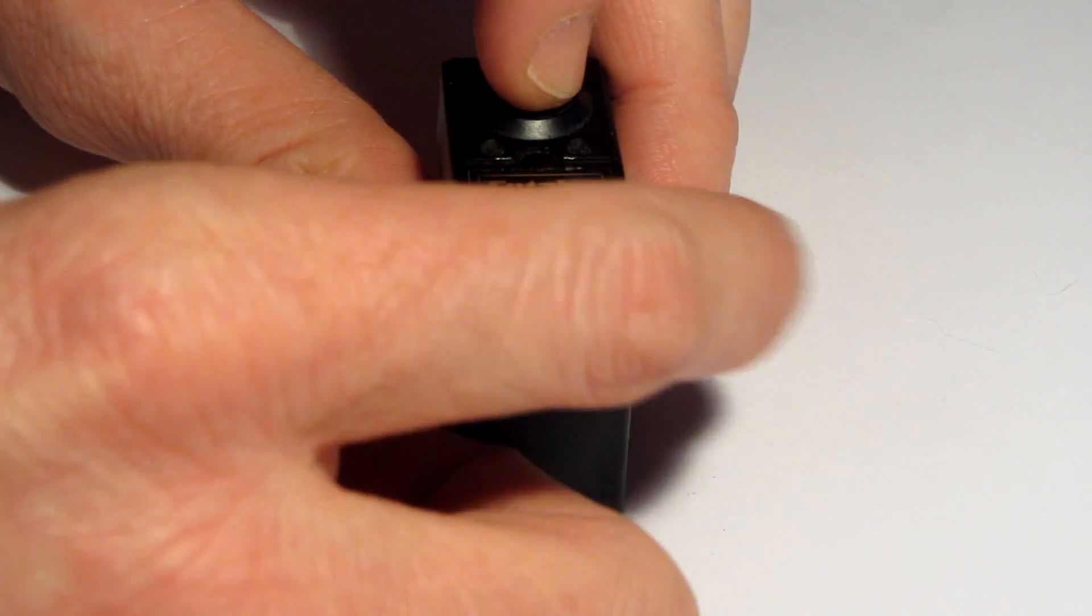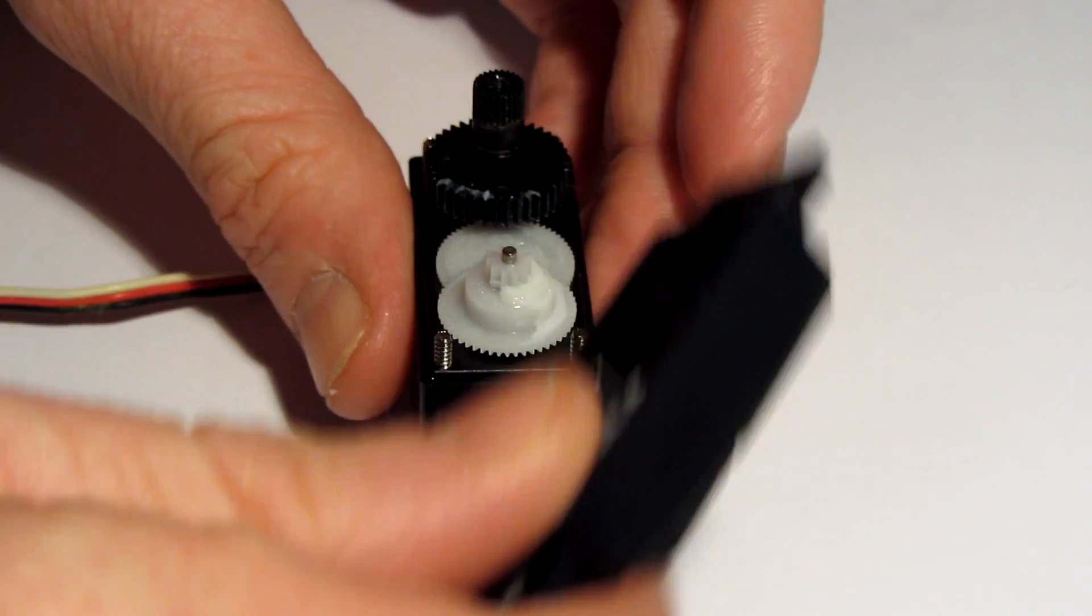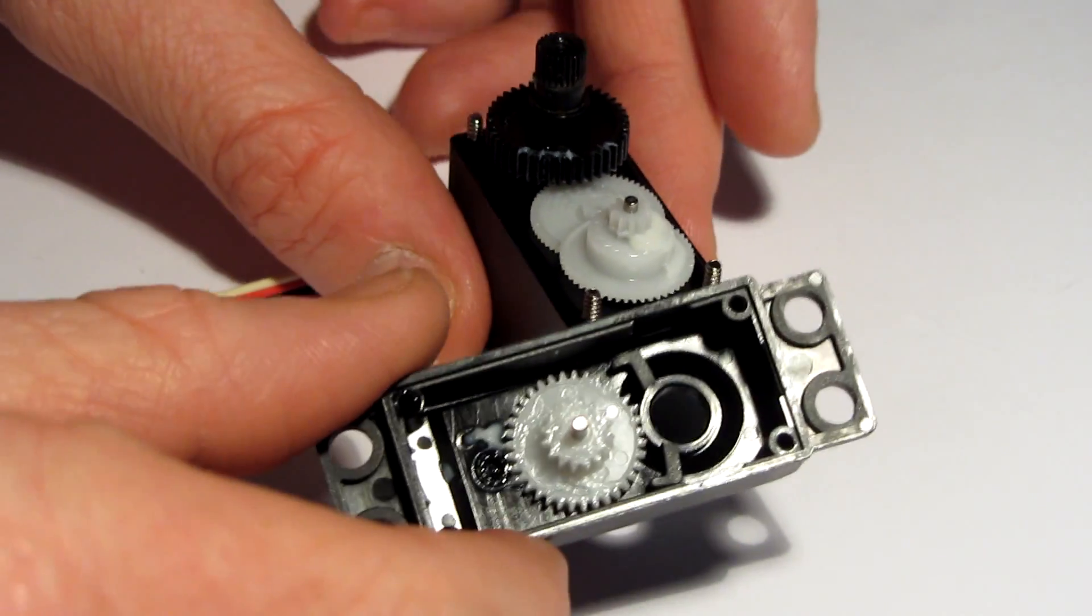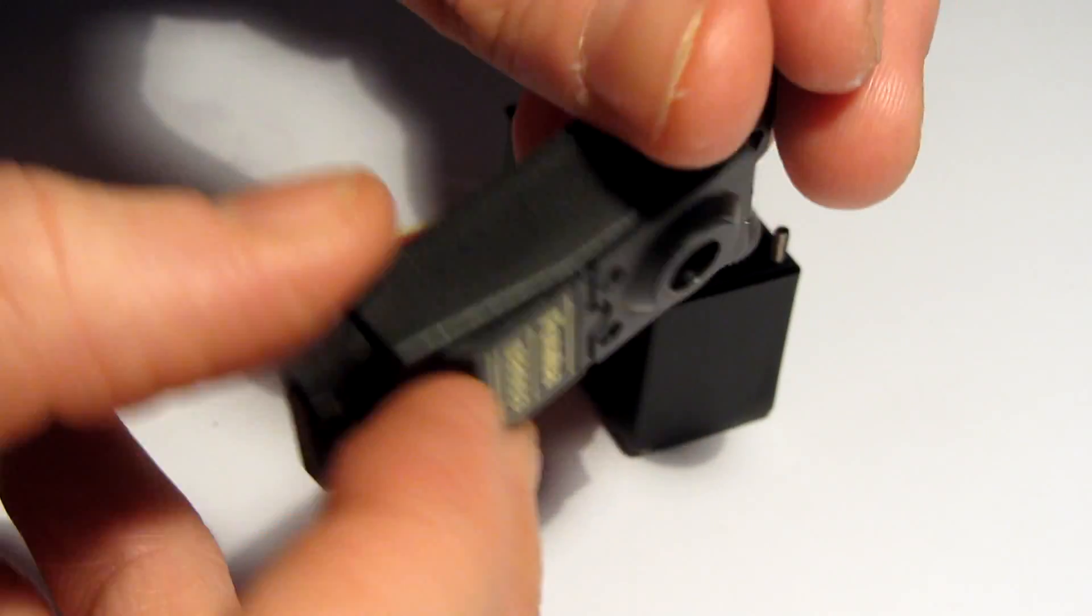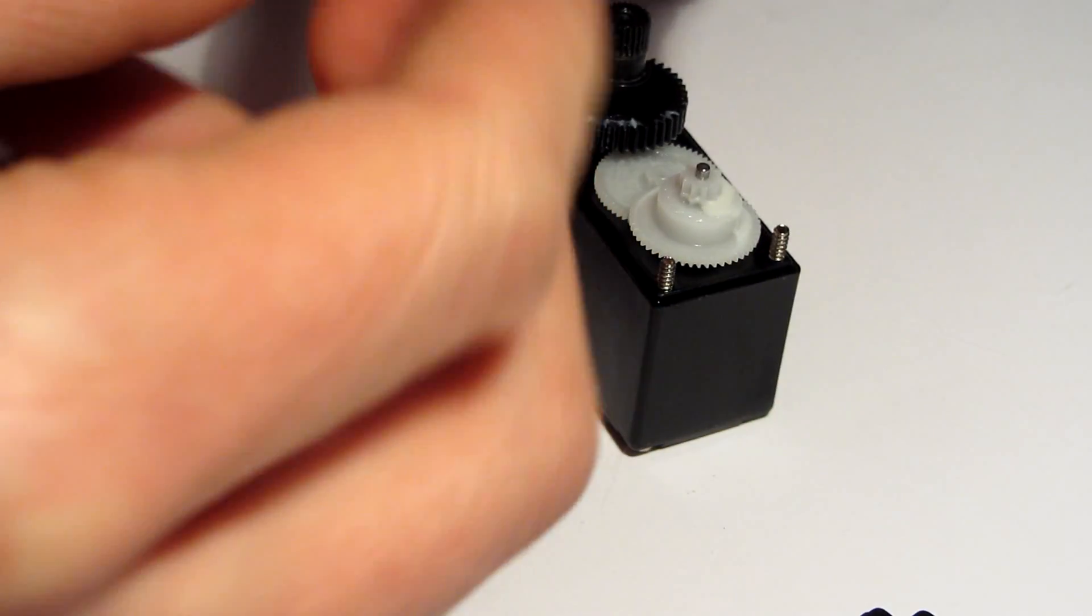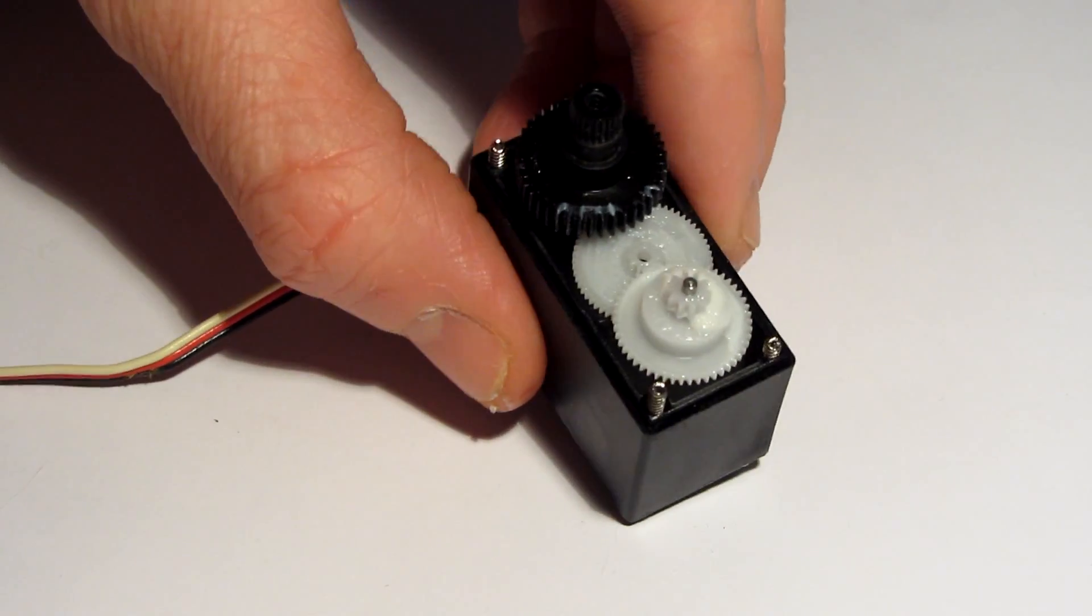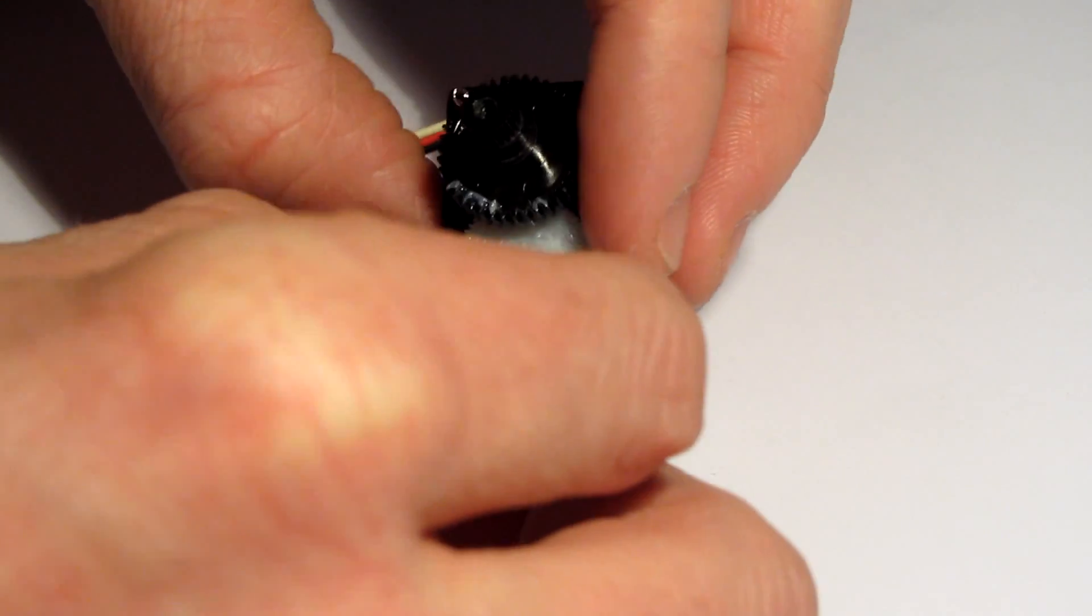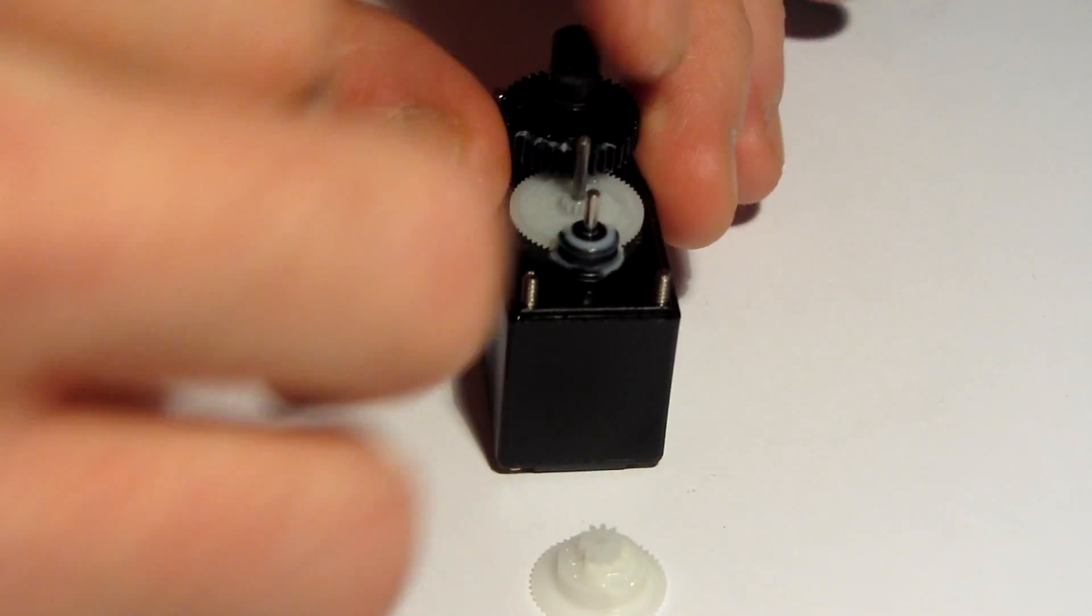Once we've done that, take off the gear from the top and you should be left with some gears. You may find that the gear sometimes stays in the top part here, in which case you just want to remove it. Put the top to one side. We're just going to look at the main gear. If your spindle has come loose, it's probably best to pop it back into the servo itself.